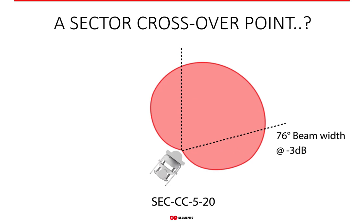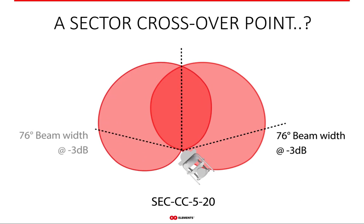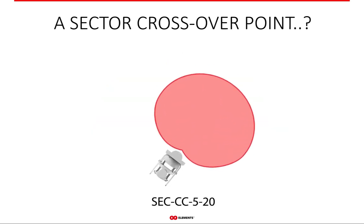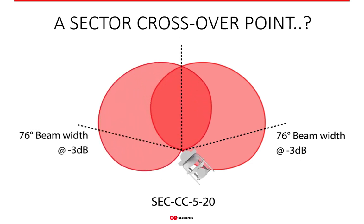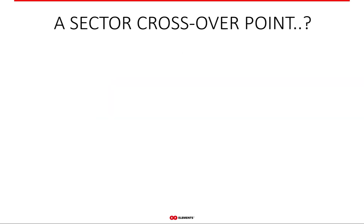In antenna textbooks, the minus 3 dB beam width angle marks the so-called crossover point of two sectors — the point where coverage areas of two sectors need to overlap to ensure proper network functioning. However, for the WISP industry, the usefulness of the sector crossover point is really negligible due to the unregulated nature of WISP networks.